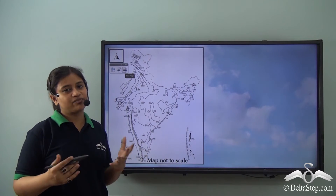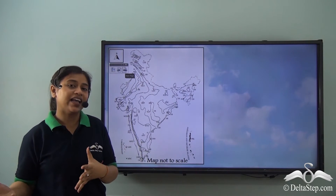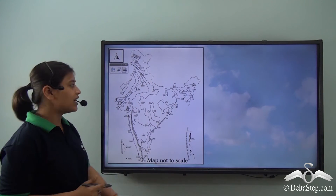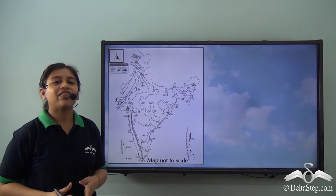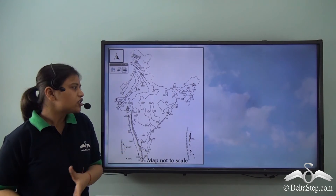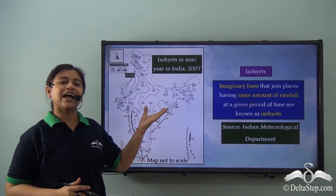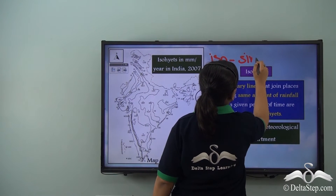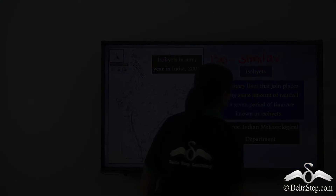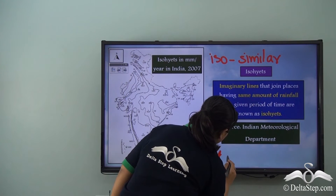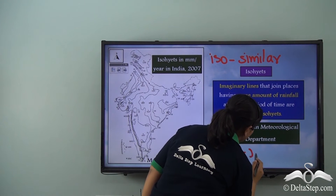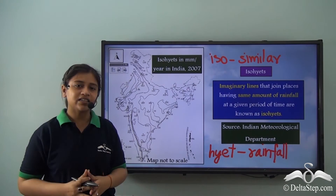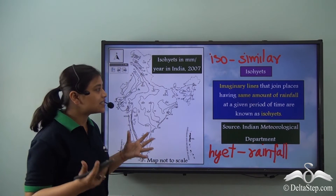There are imaginary lines that could be drawn to join places having the same amount of rainfall. Just like here on the map of India, these lines join places that have had the same amount of rainfall at a particular period of time. These lines are known as isohyets, where 'iso' means similar and 'hyet' means rainfall. Isohyets are imaginary lines that join places having the same amount of rainfall.